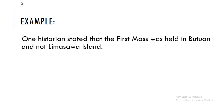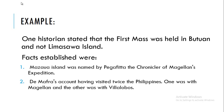Example: One historian stated that the first mass was held in Butuan and not Limasawa Island. Facts established were: Mazawa Island was named by Pegafetta, the chronicler of Magellan's expedition; and Demafra's account, having visited the Philippines twice — once with Magellan and the other with Villalobos. This is a question of reliability: of the two accounts, which one was believable? Research is not about democracy where majority wins.